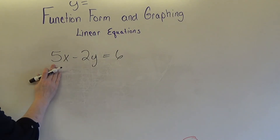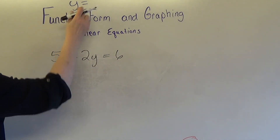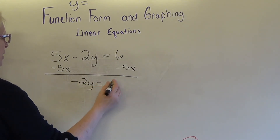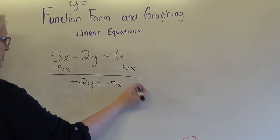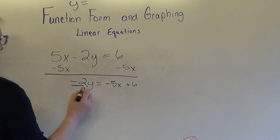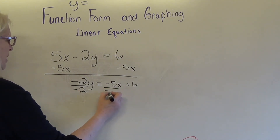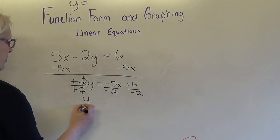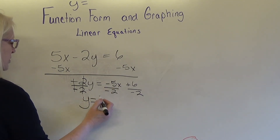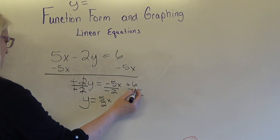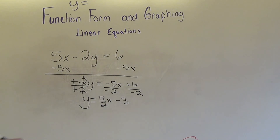Let's do one more — changing this equation to function form. We've got to move the x to the other side; we want y by itself. This is a positive 5x, so I do the opposite. Drop down my negative 2y, write the x term first as negative 5x, and scoot the positive 6 over. Now I divide everything by negative 2: two negatives make the fraction positive, so I get y equals five-halves x minus 3. We just wrote this equation in function form.